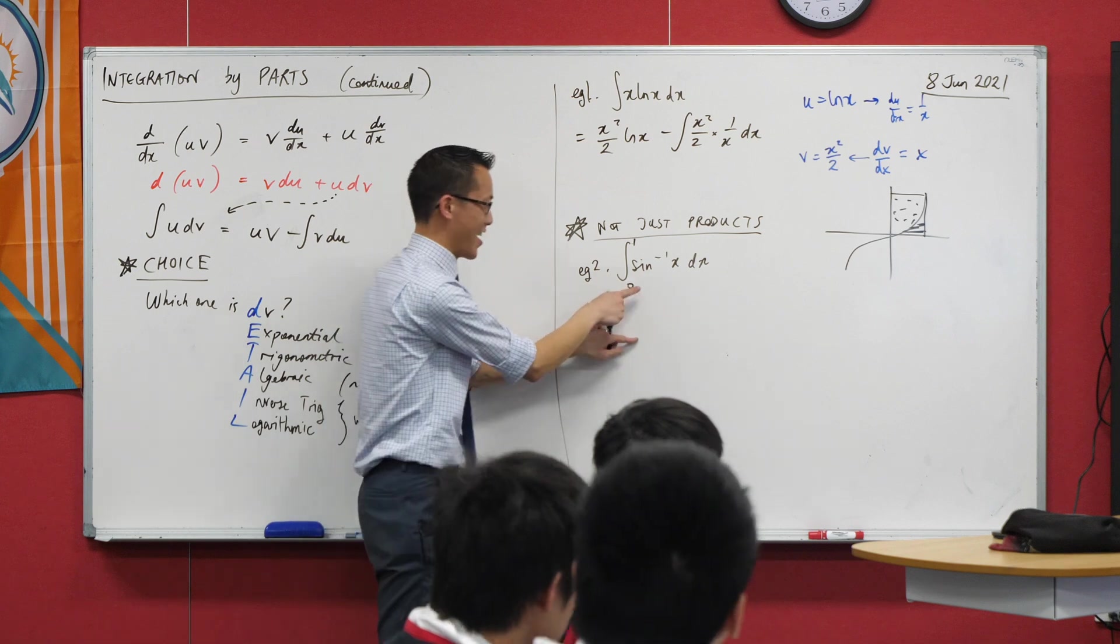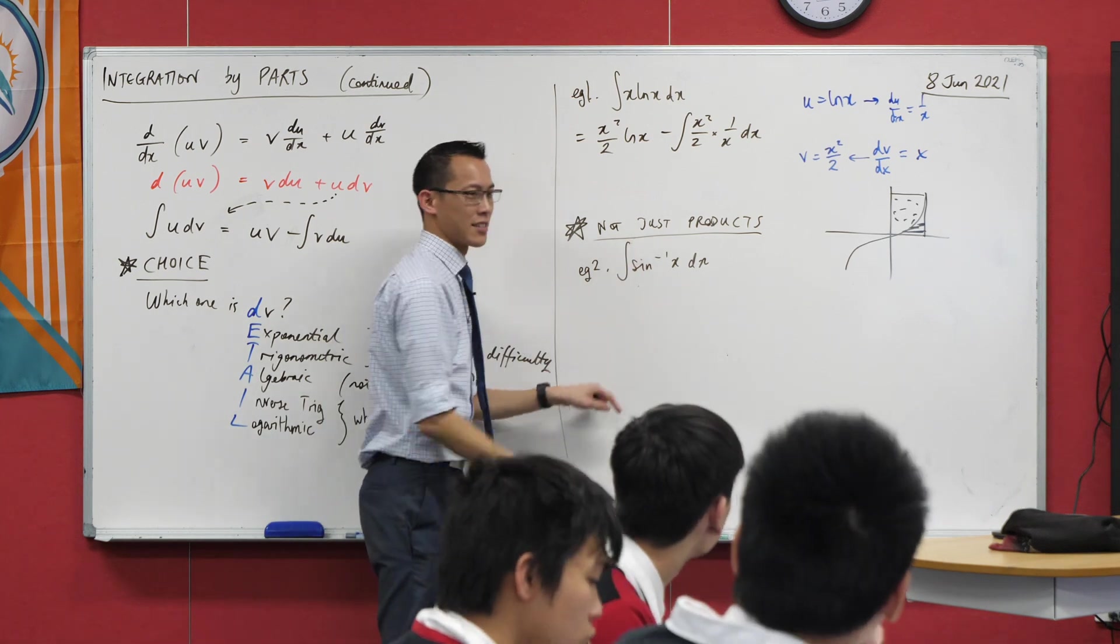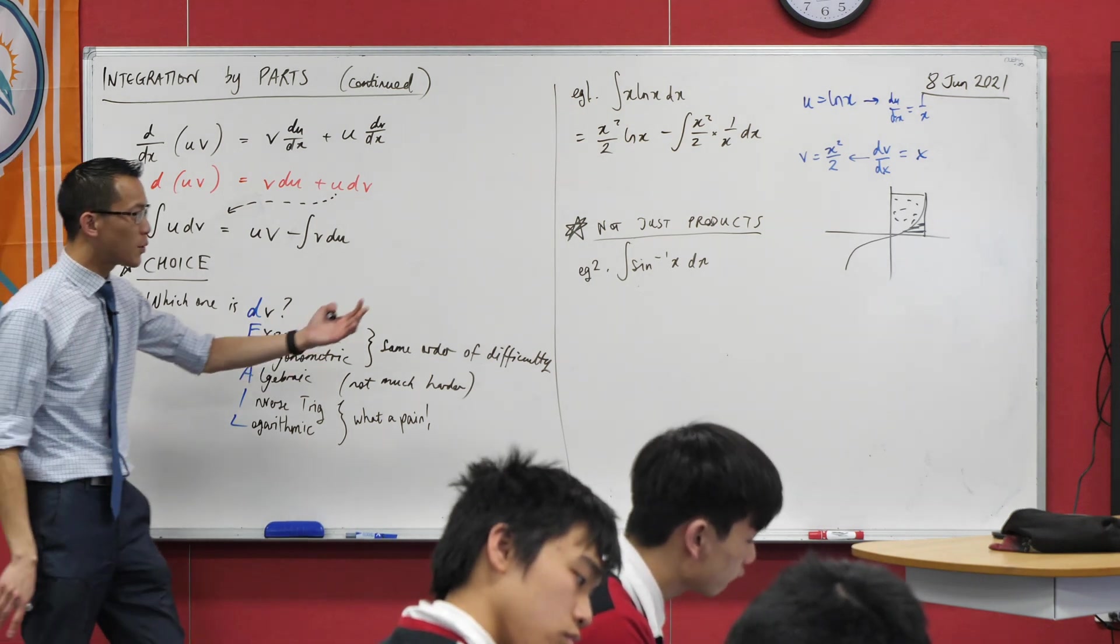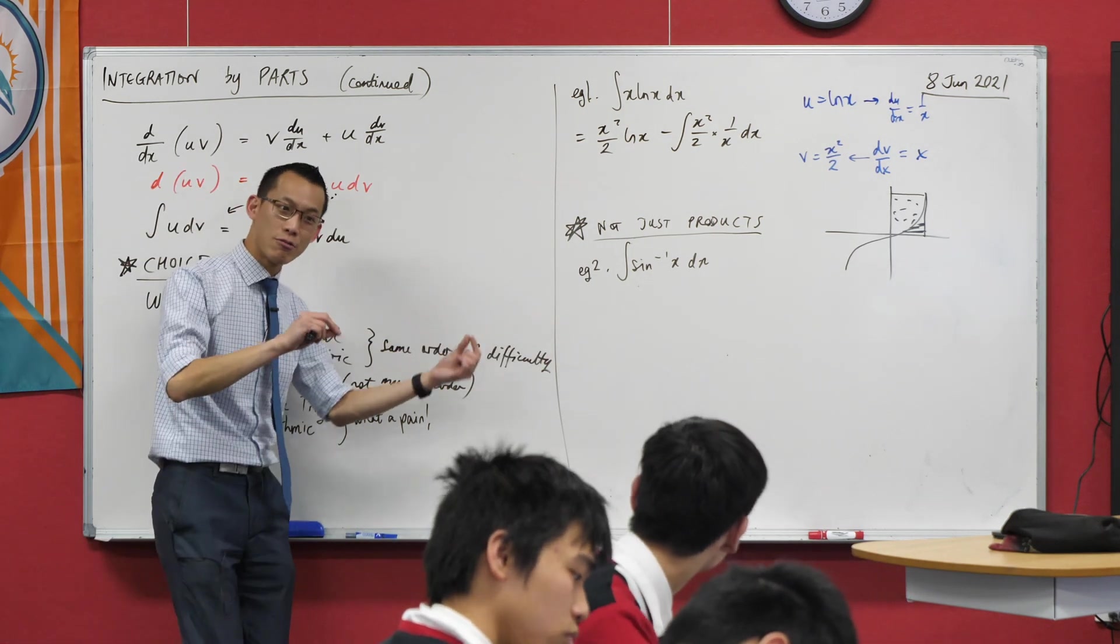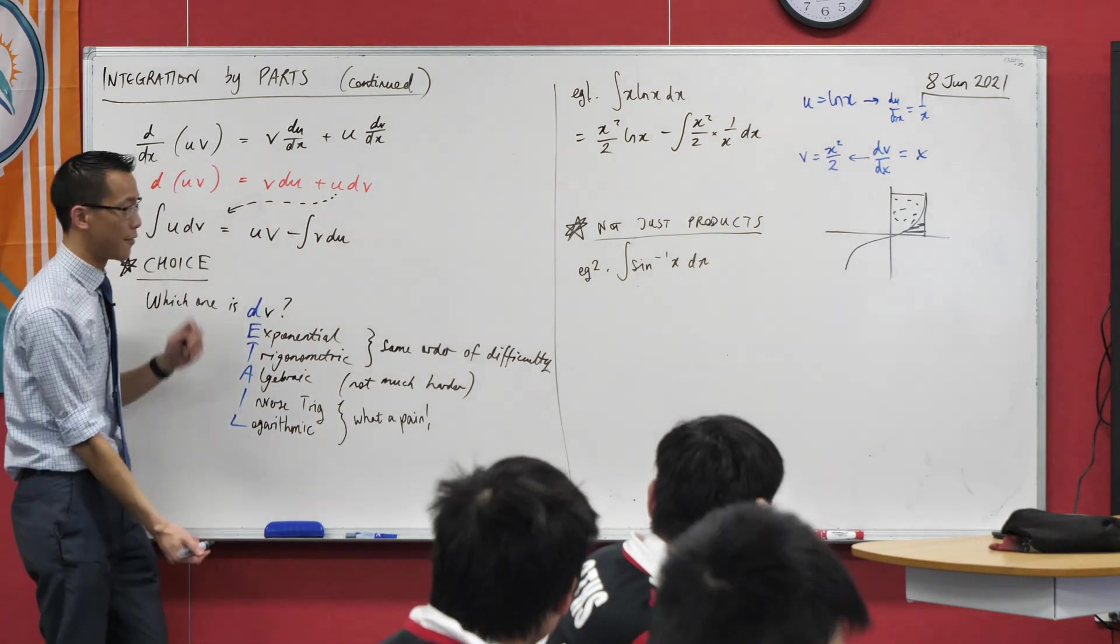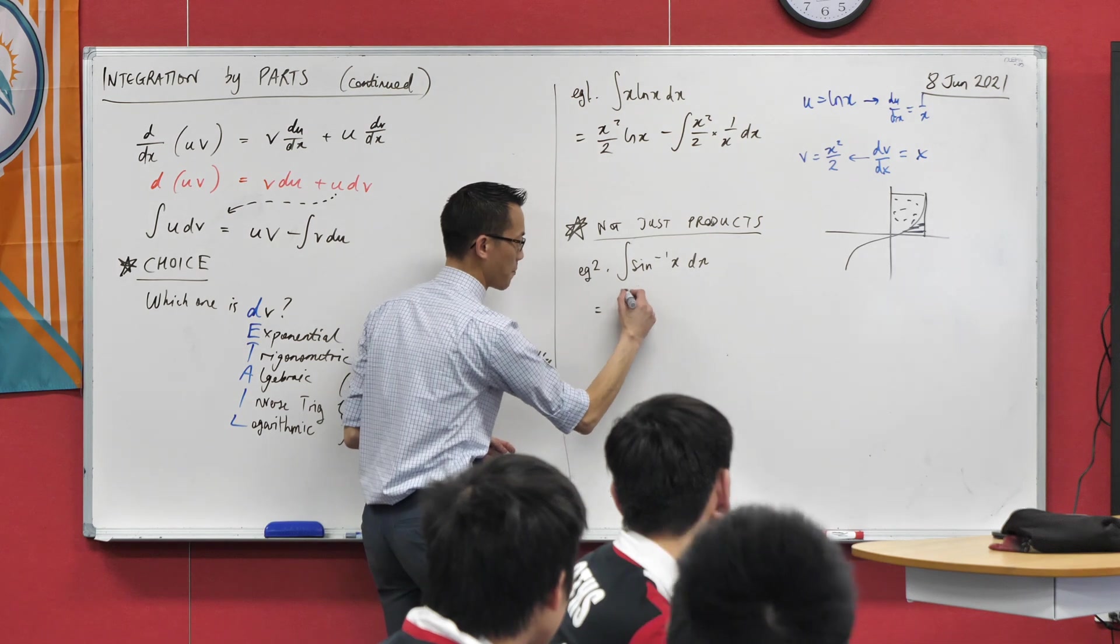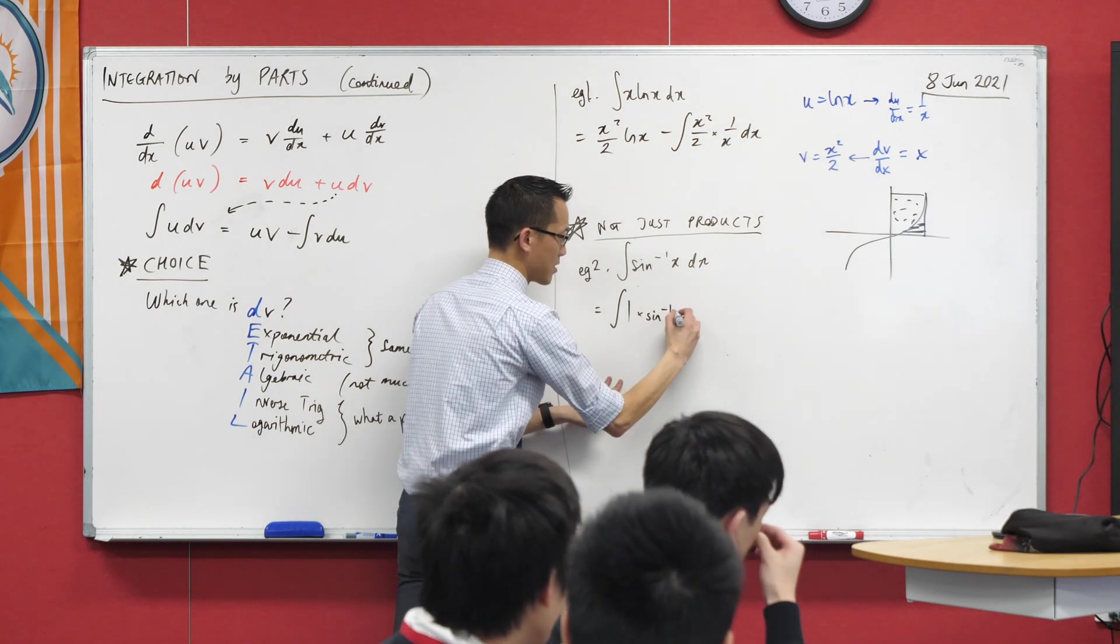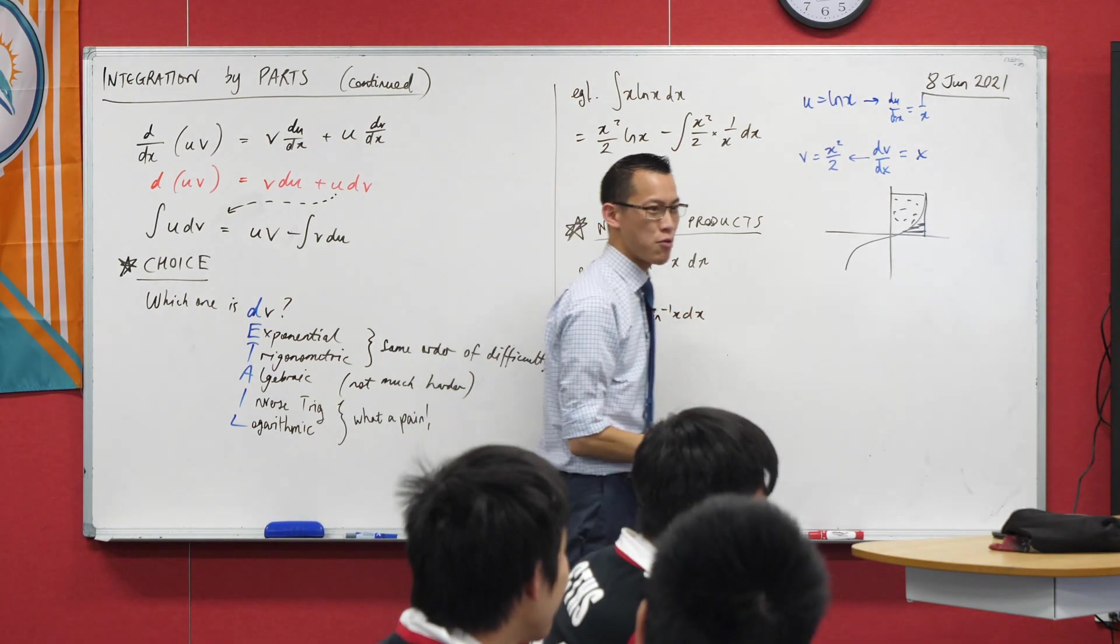But I haven't given you that, have I? I've given you this. So we need to find a primitive of some kind. Now, I gave you this clue. I said even though it doesn't look like a product, we can write it as a product, and then use all of this knowledge we already have. So, I'm going to hand you this. Let's integrate not just sine inverse, but one times sine inverse. Look, Ma, it's a product.